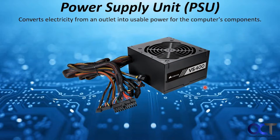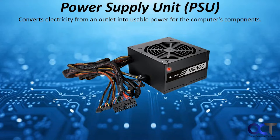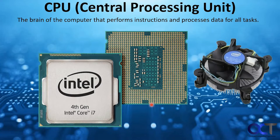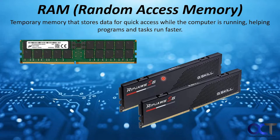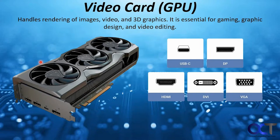Now we have the power supply, or PSU. This converts electricity from an outlet into usable power for the computer's components. When buying a power supply for building your own computer, you have to take into account your other hardware — such as a high-end video card — and get a power supply to match. Pre-built computers usually do a good job of matching the PSU with components, but if you're upgrading you might need to upgrade your power supply too. It will have various connections to plug into the motherboard, your drives, and so on. The video card also has a separate power connection on top specifically for it, to run the fans and all that.